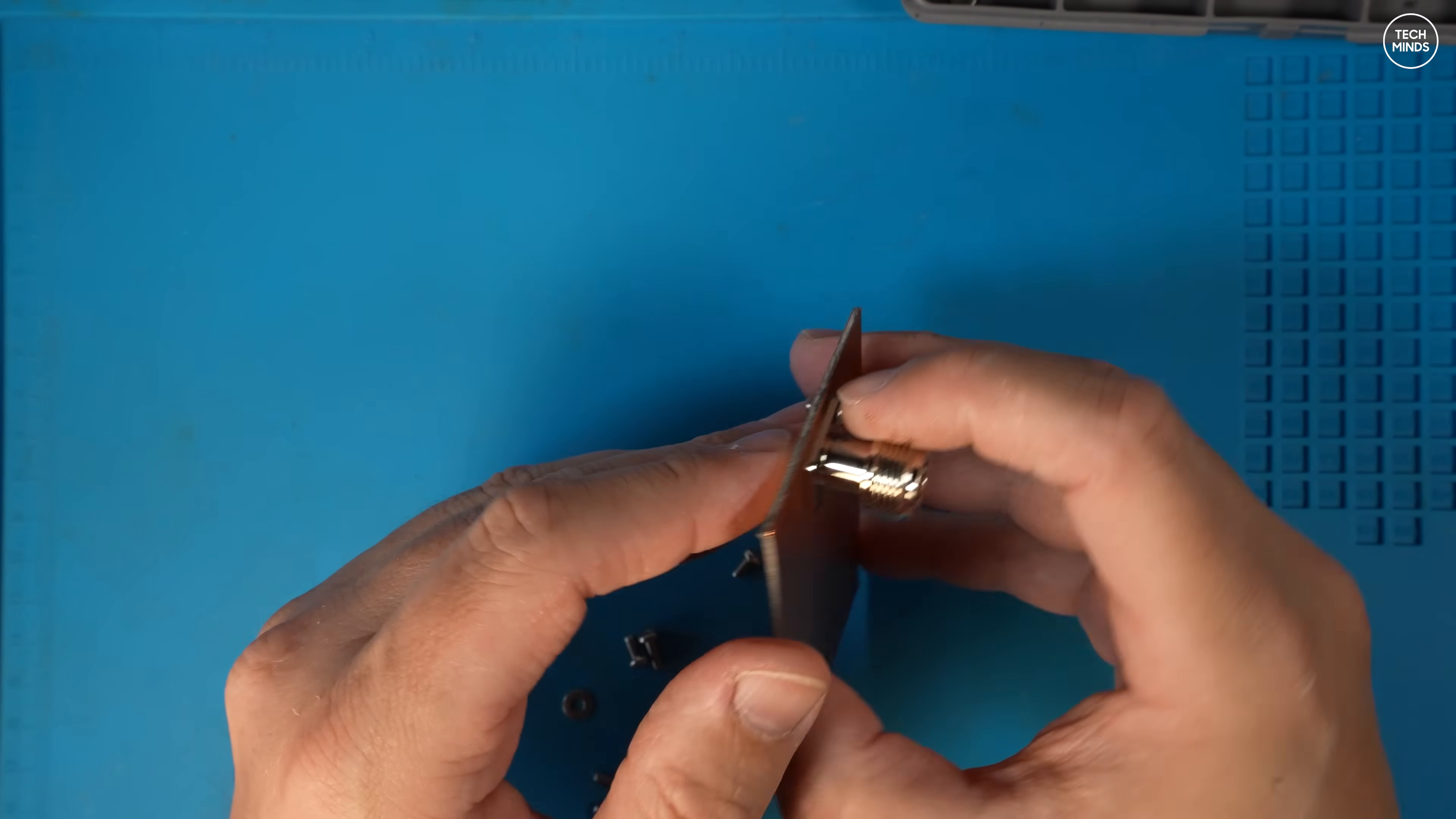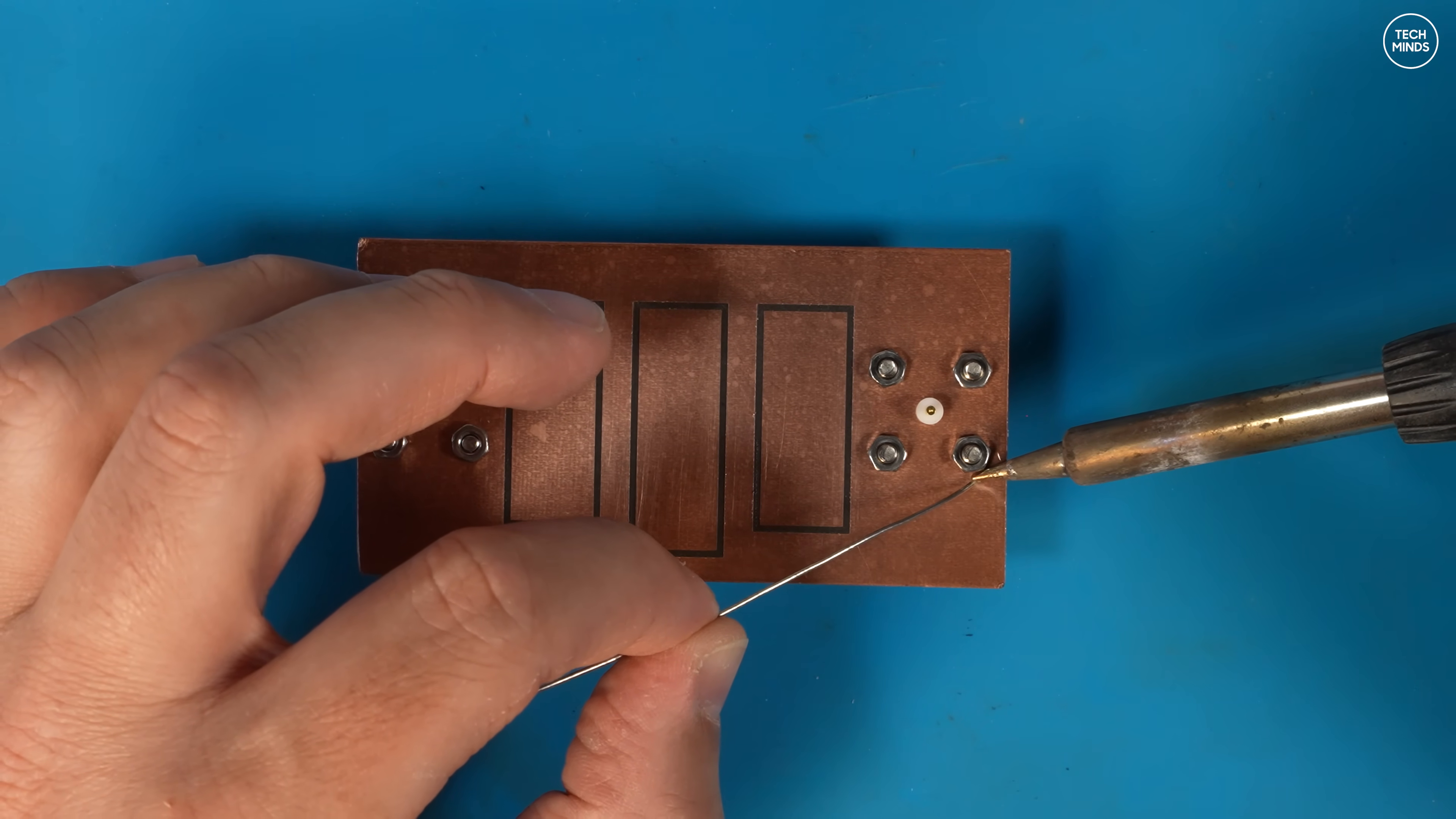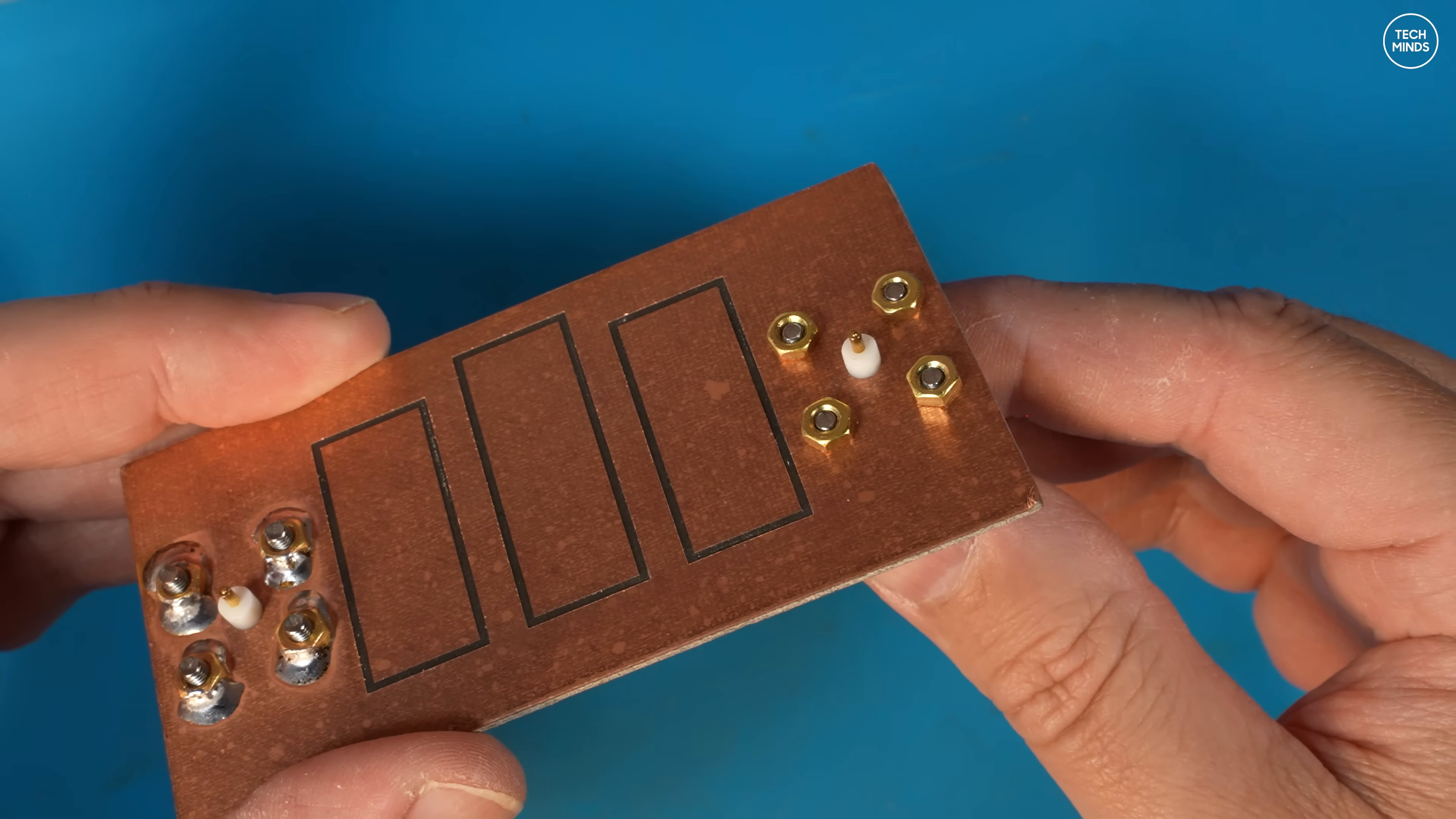First I'll attach these N-type sockets using bolts and nuts to secure them into place. You can see here that the center pin comes through the PCB with the white insulation still intact. To ensure a perfect ground connection between the PCB and the nuts on the N-type, I decided to solder them. However, after a few seconds of attempting to solder these nuts, I realized that it just wasn't going to happen.